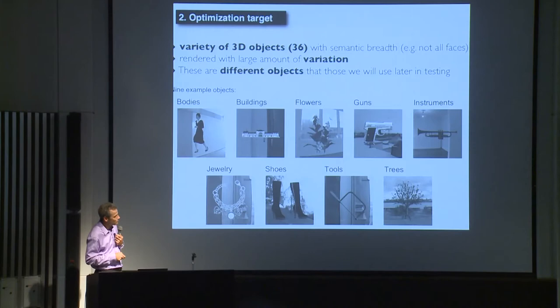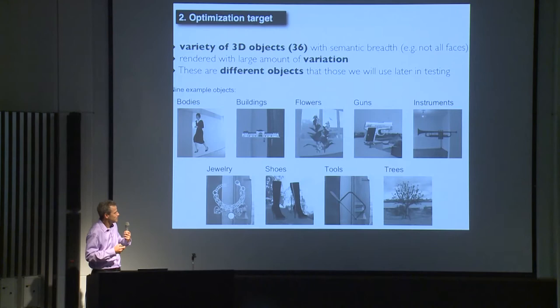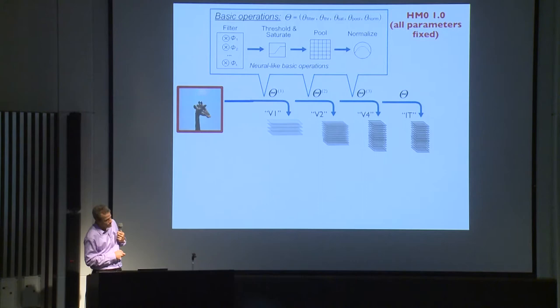We have thousands of unknown parameters. We decided to use optimization methods to find specific algorithms in this class. We believe the ventral stream was built to do the variant object categorization tasks I've shown, so that was our optimization target. The work was led by Dan Yamins, a postdoc, and Ha Hong, a graduate student. They optimized on rendered objects on top of backgrounds with lots of variation — objects different from the ones we use to test the model. Then a build model emerged — HMO 1.0 — with four layers, all parameters fixed.